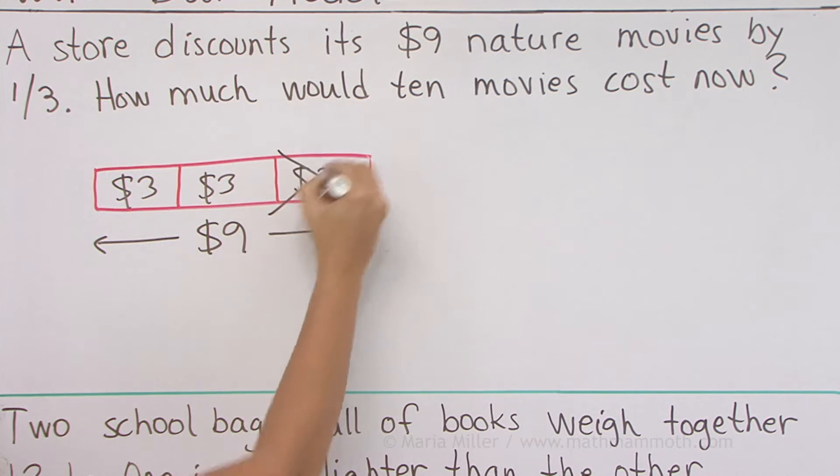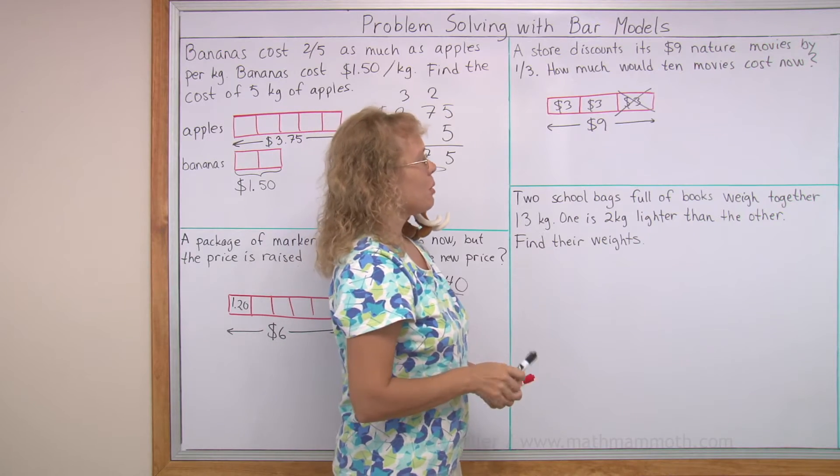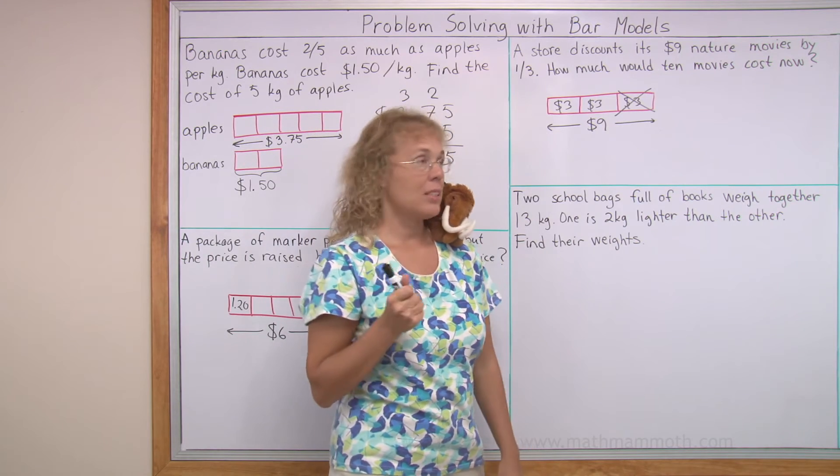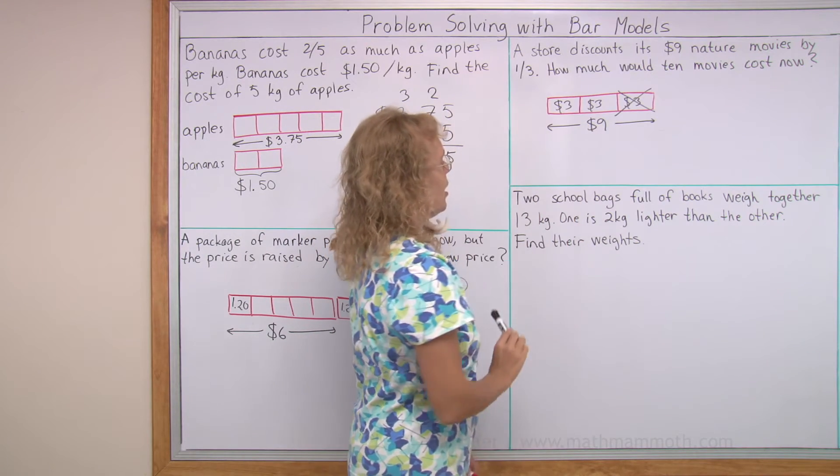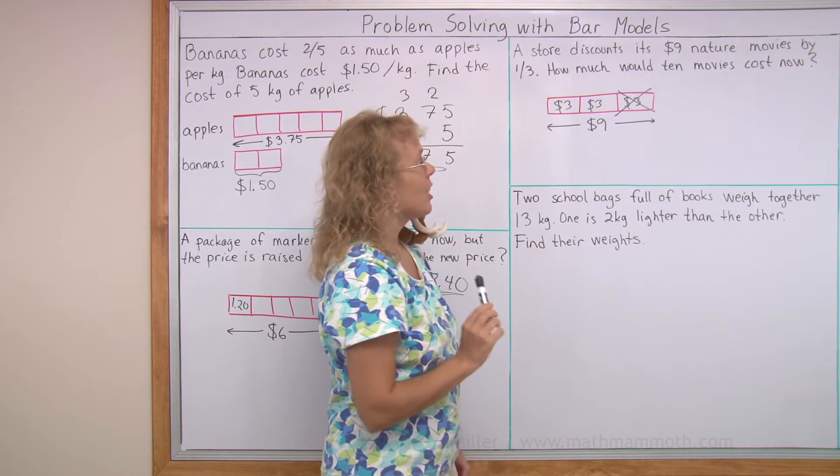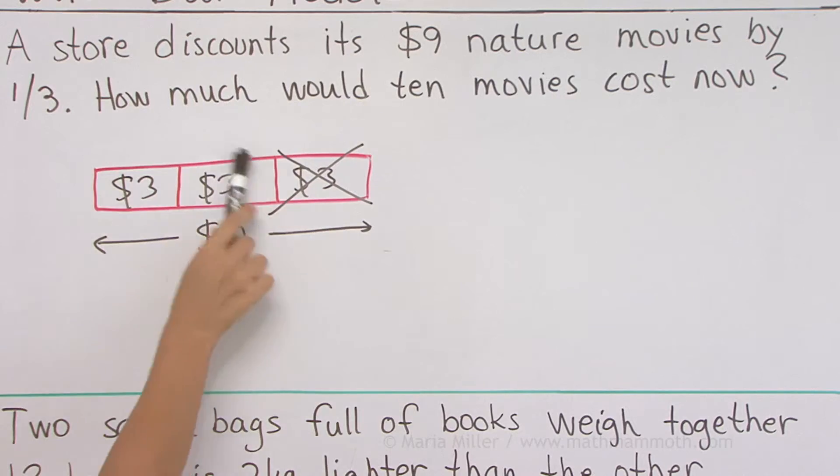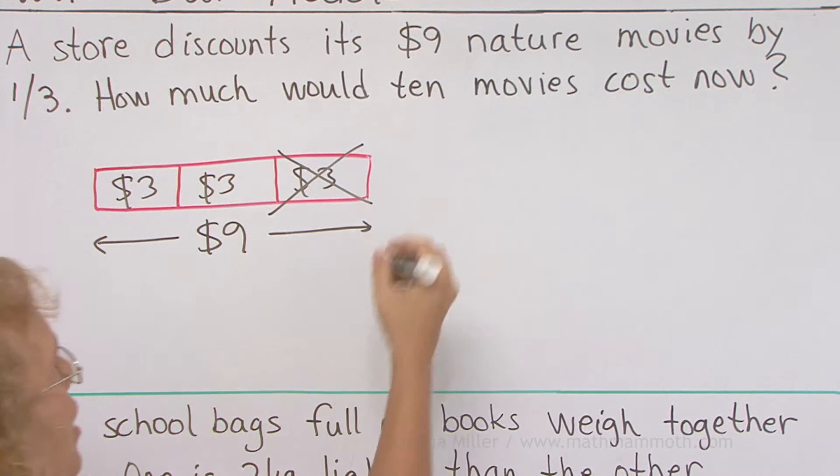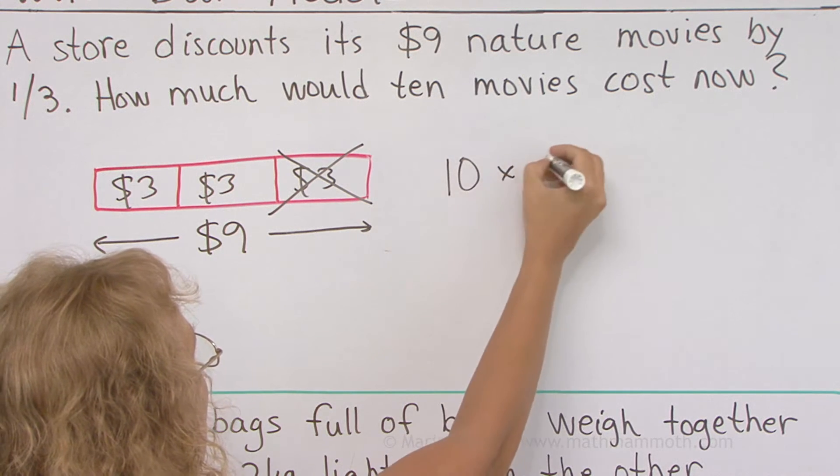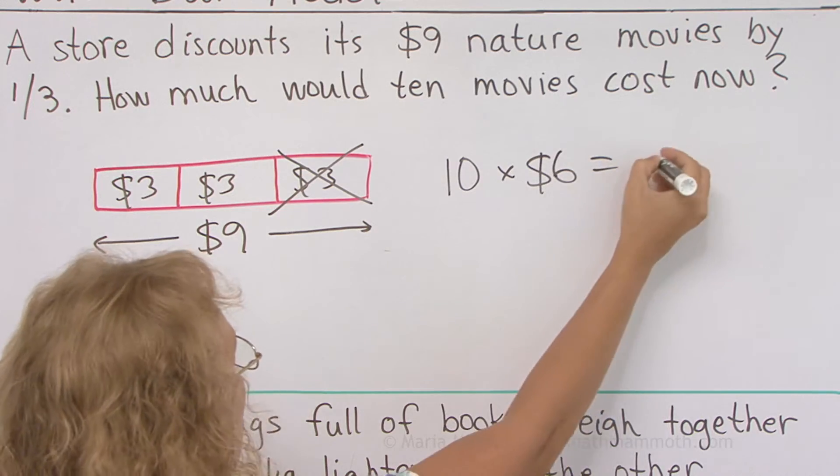So this goes away because it is discounted by one-third of its price. And now, what is it asking? It's not asking how much one movie costs. It's asking how much would 10 movies cost now? And since one movie costs now $6, we will get 10 movies, 10 times $6 equals $60.